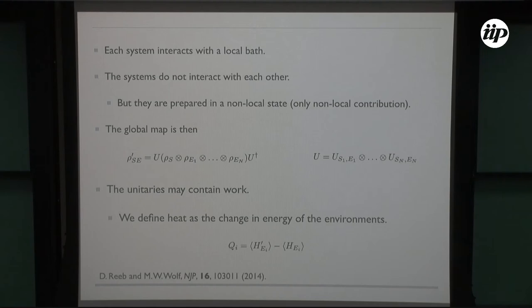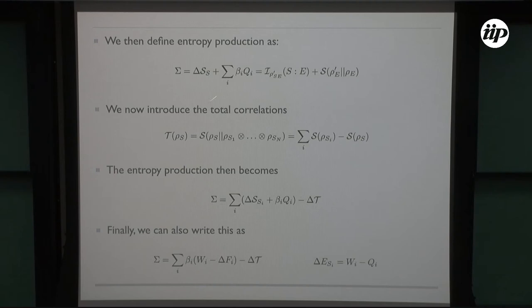What one can do is the entropy production is defined in the usual way as the rate of change of the system entropy plus all the heat. This is equivalent to the total mutual information between system and environment and the relative entropy of the environment.